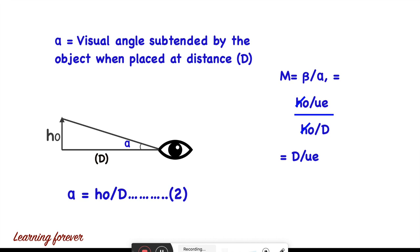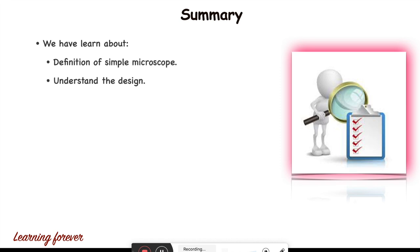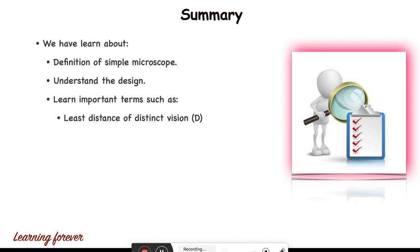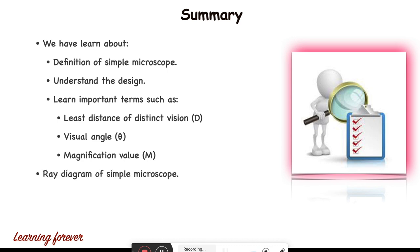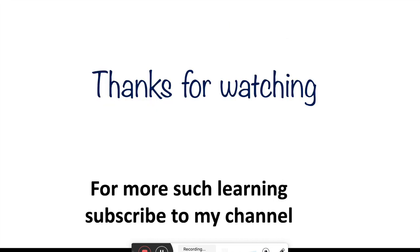As a summary, in today's e-lecture session we have learned about the definition of simple microscope, understood its design, and learned important terms such as least distance of distinct vision D, visual angle theta, and magnification value M. We also drew the ray diagram of the simple microscope and derived the formula for its magnification value. Thanks for watching. For more such learning, subscribe to my channel.